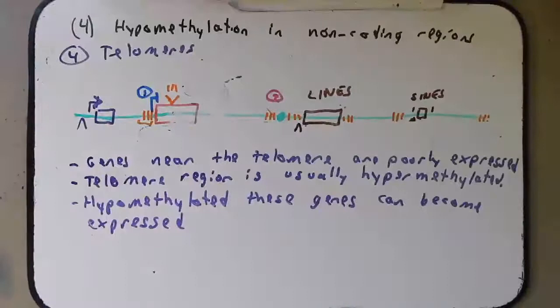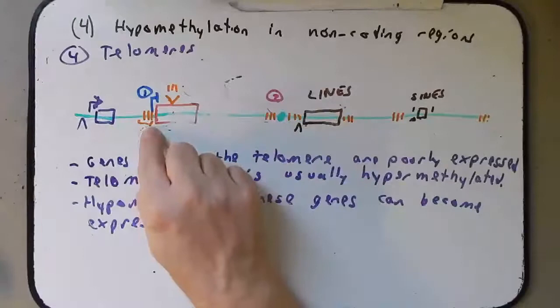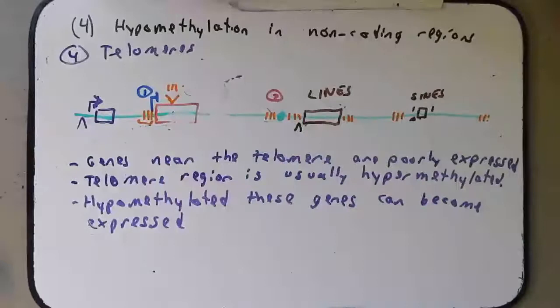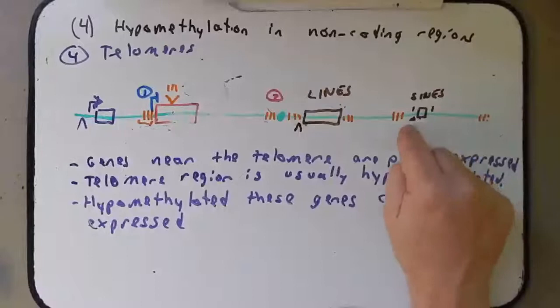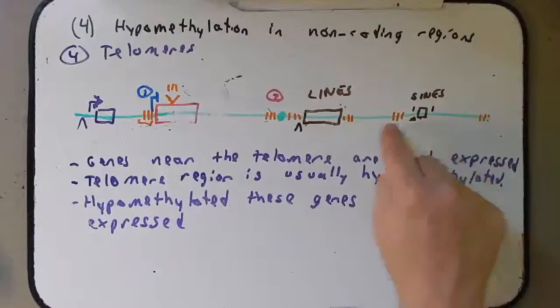So those are four ways that hypomethylation in non-coding regions can lead to misexpression of tumor suppressor genes or oncogenes. One was in microsatellite regions that can change the expression of genes — hypomethylation, but also just mutating the microsatellites. The second was hypomethylating regions near the centromere. The third was hypomethylating promoters within the transposons of SINEs or LINEs. And the fourth was hypomethylating telomeres.